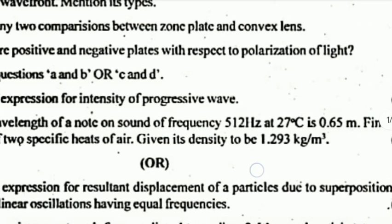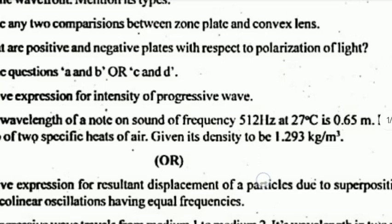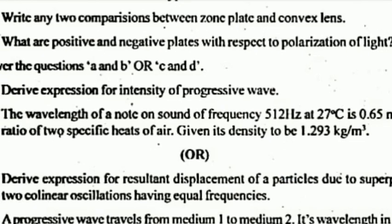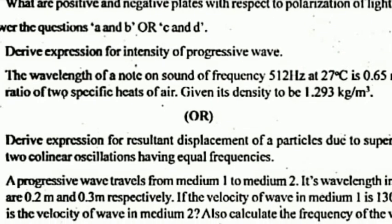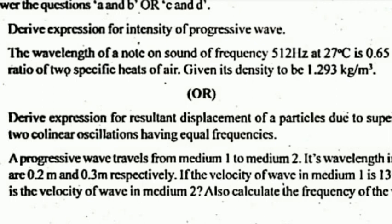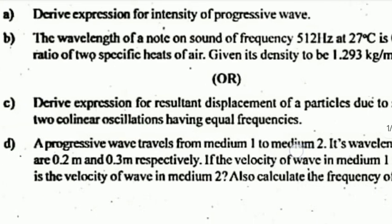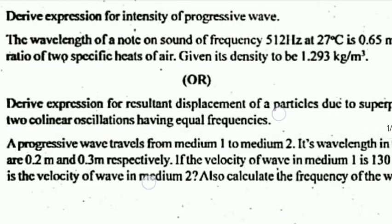D) A progressive wave travels from medium 1 to medium 2. Its wavelength in the two media are 0.2 meter and 0.3 meter respectively. If the velocity of the wave in medium 1 is 130 m/s, what is the velocity of the wave in medium 2? Also calculate the frequency of the wave.